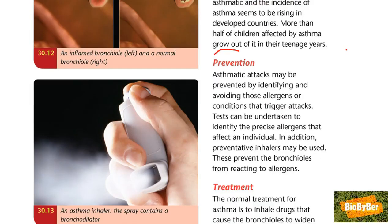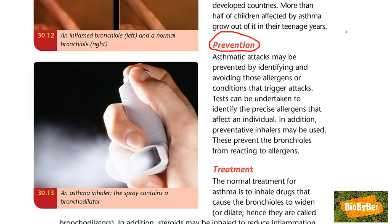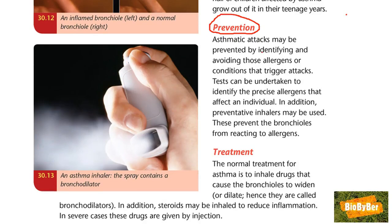Prevention: asthmatic attacks may be prevented by identifying and avoiding the allergens or conditions that trigger attacks. Tests can be undertaken to identify the precise allergens that affect an individual. In addition, preventative inhalers may be used — these prevent the bronchioles from reacting to the allergens. It is acceptable in the exam to state that prevention involves avoiding the allergens or conditions that trigger attacks.